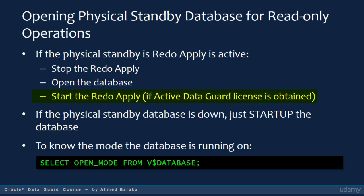If you have the Active Data Guard license, you can then start the redo apply services. If the physical standby database is down, you can just start up the database. If you want to know whether the database is mounted or opened, query the open mode column from the V$DATABASE view.